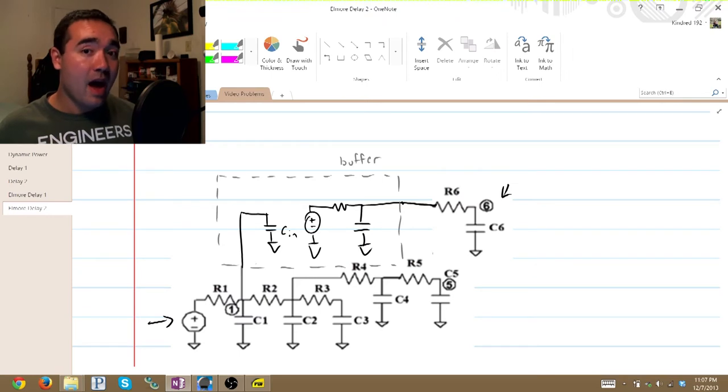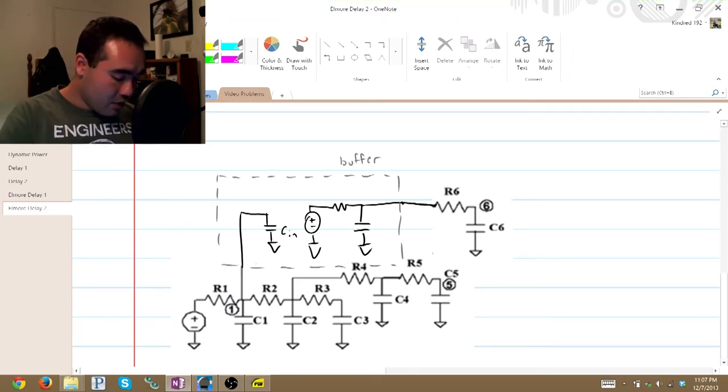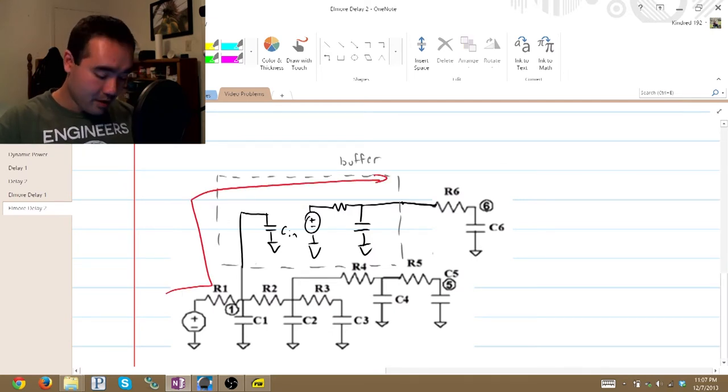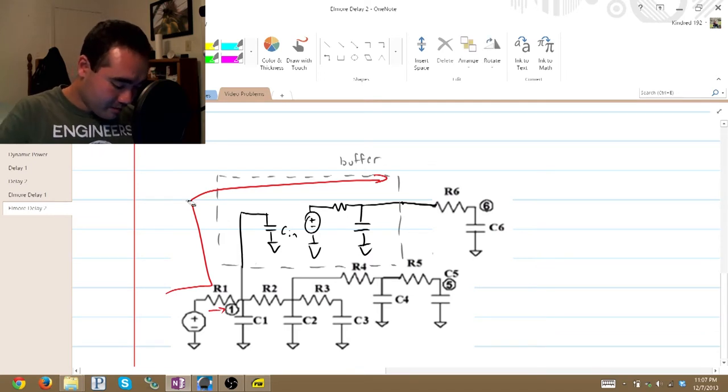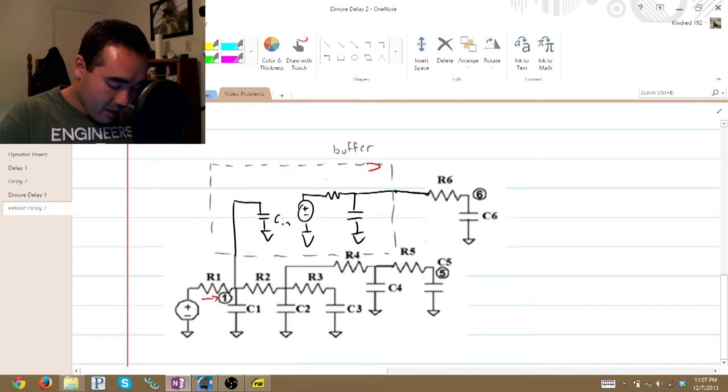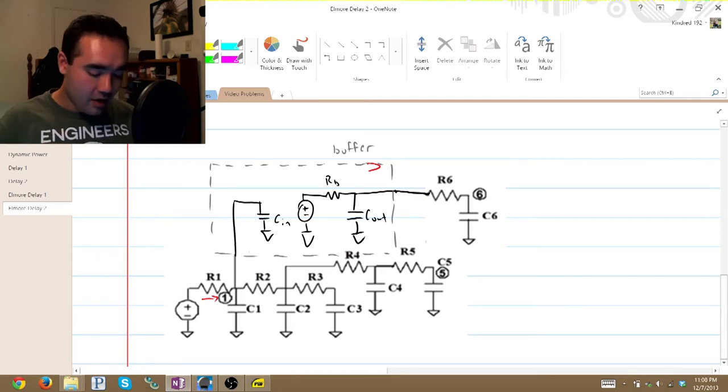Now again, I'm just going to go ahead and start computing. We know that this is our path of propagation. Therefore, we're going to be crossing R1, and I didn't write it in there, RB, and R6.